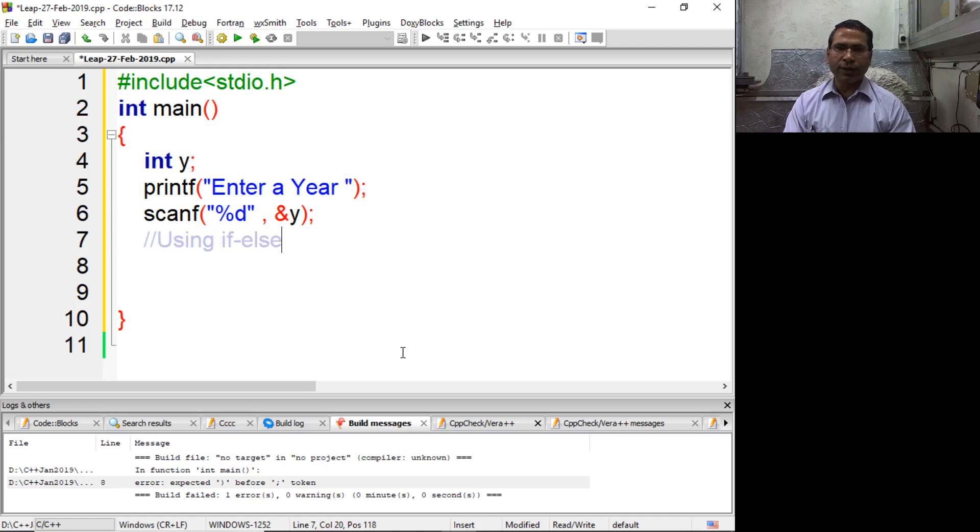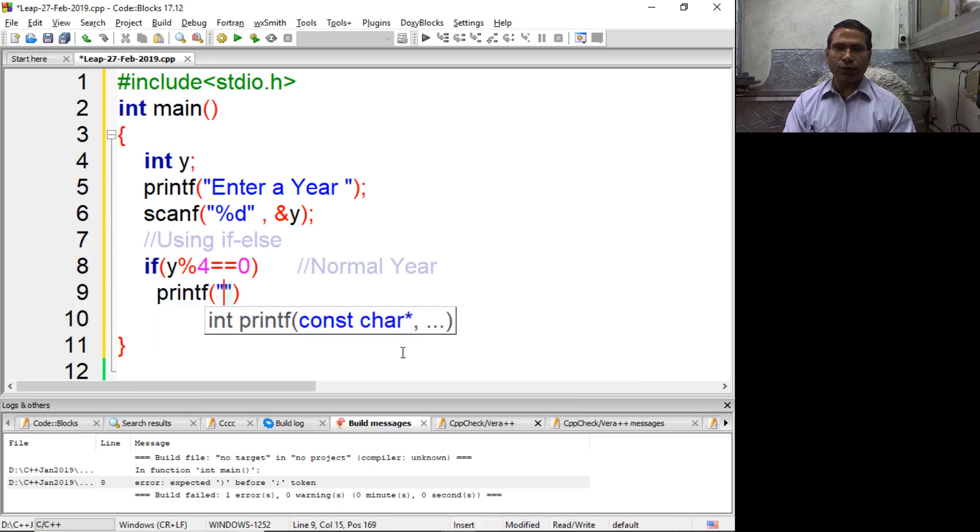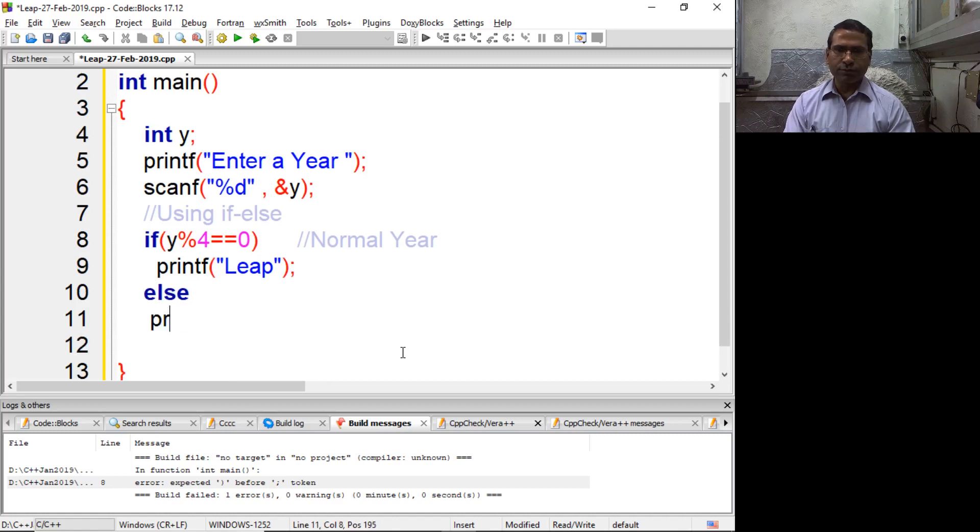When we use if-else, we write it like this. Here I am considering normal years. A normal year is leap if it is divisible by four, otherwise non-leap. But we have to design the program without using if-else.